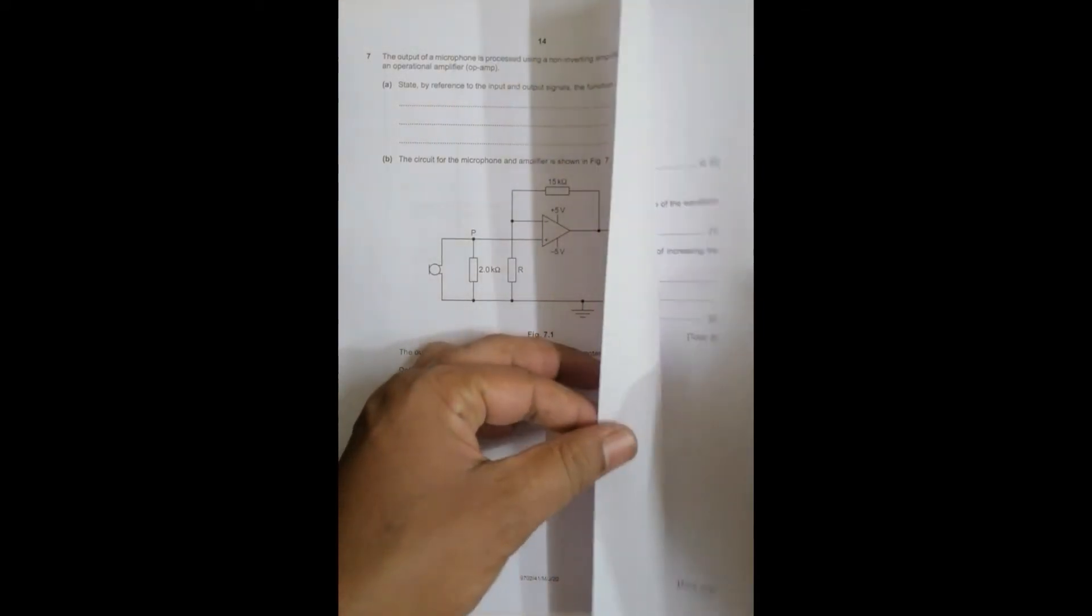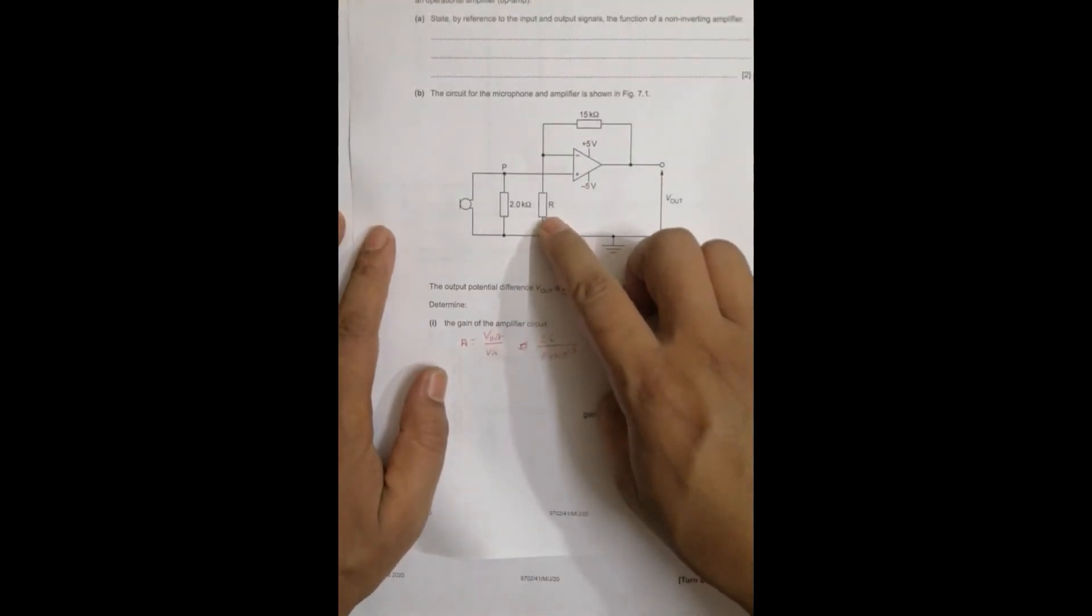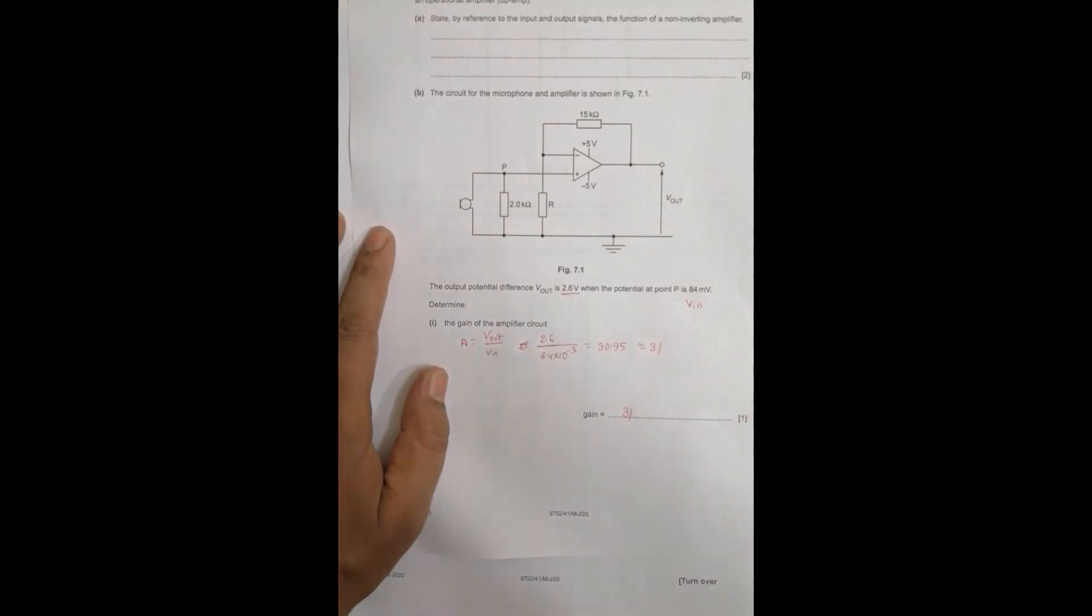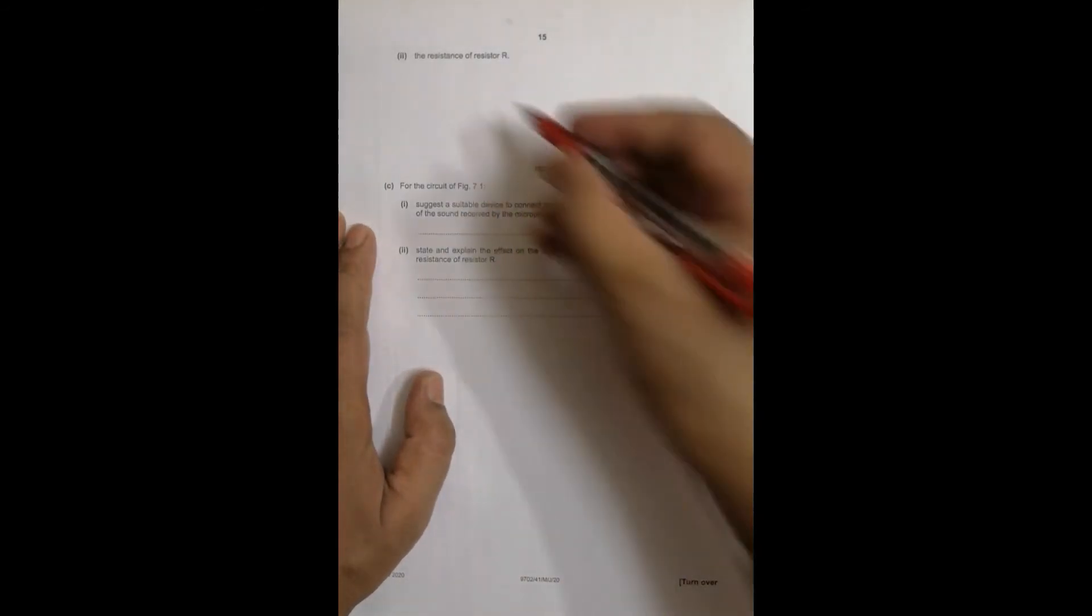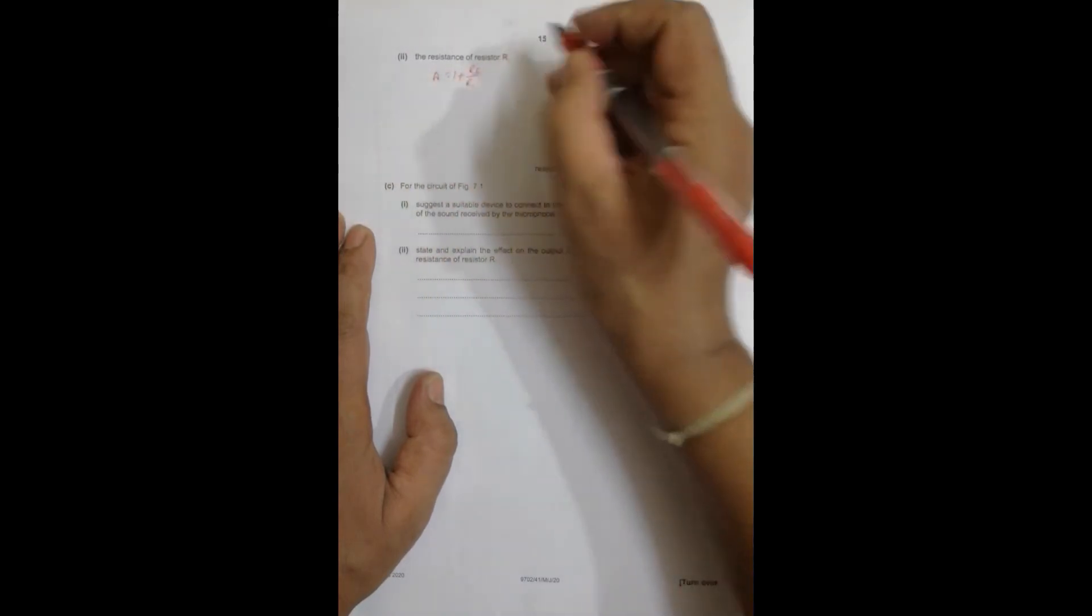Now we have to find the resistance of the resistor R. So we have to find this thing. So since this is a non-inverting amplifier, we have the formula for gain is, formula for gain is equal to A equal to 1 plus Rf by R1.